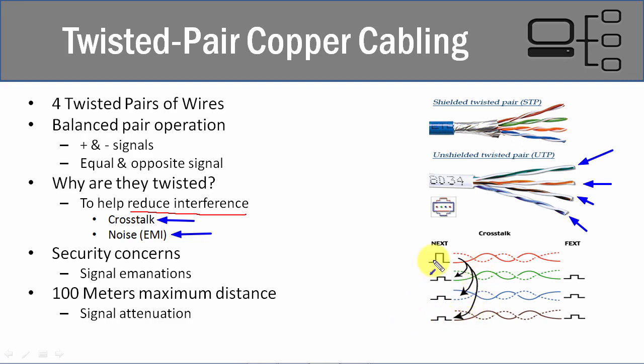There is also a security concern with this type of cabling related to EMI. This cable can emanate electronic signals outside of the cabling. When that happens, hackers — if they're skilled enough — can actually pick up on those EMI signal emanations and try to pull data off of them. So there are real security concerns when using this type of cabling.